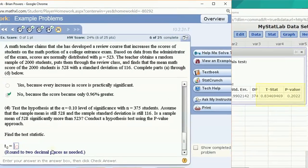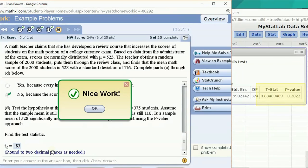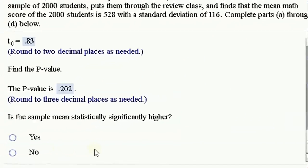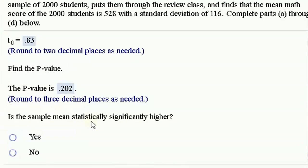So now the test statistic is 0.83, and the p-value is 0.202. Is the mean statistically significantly higher? No, it's not anymore. The p-value is greater than our alpha level. Remember, our alpha level is 0.10, so that's not less than that. It's not significantly higher in the statistical sense.